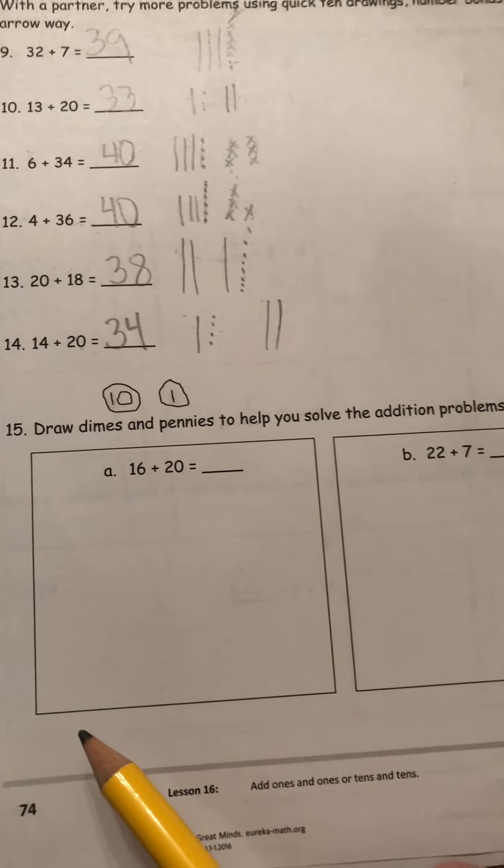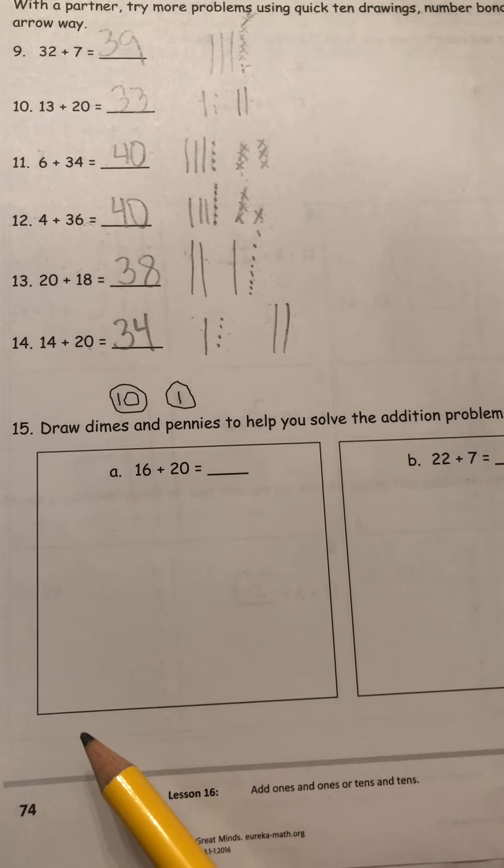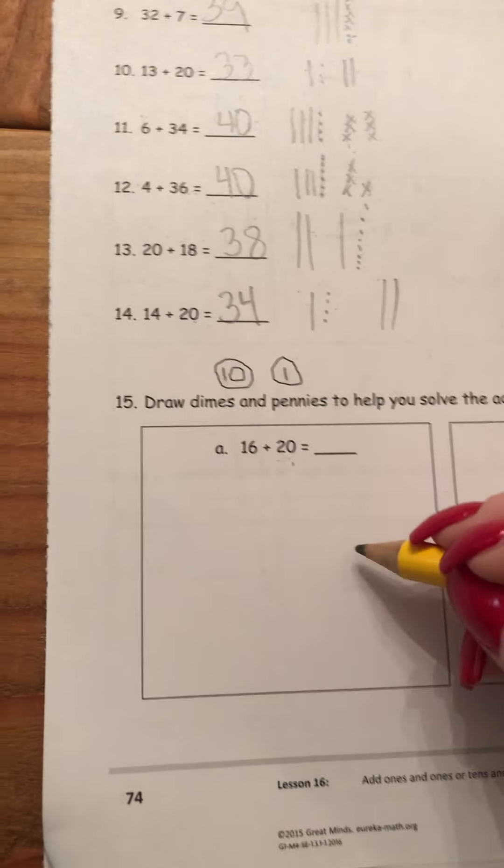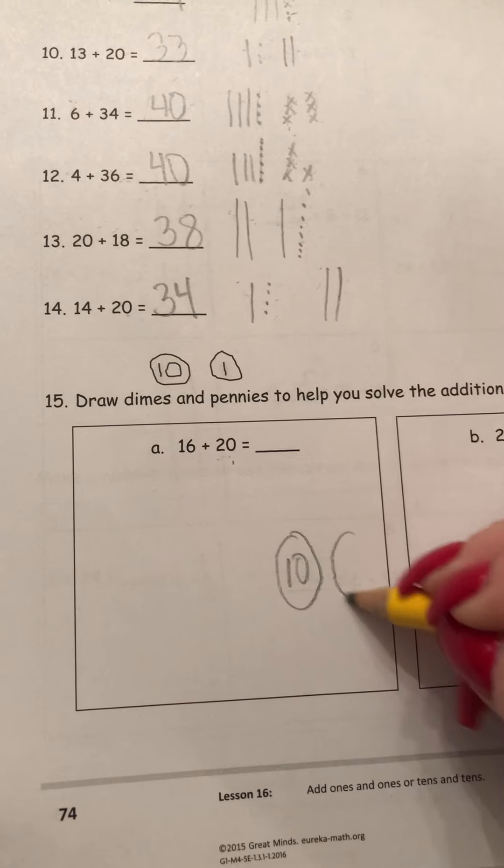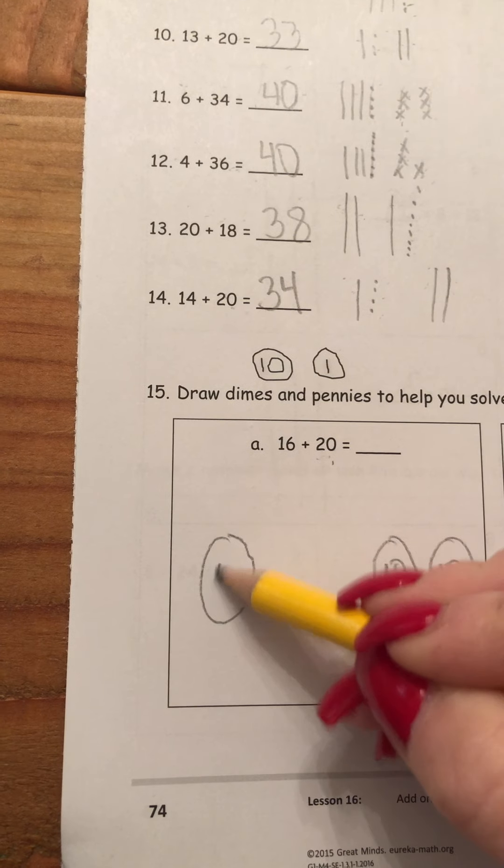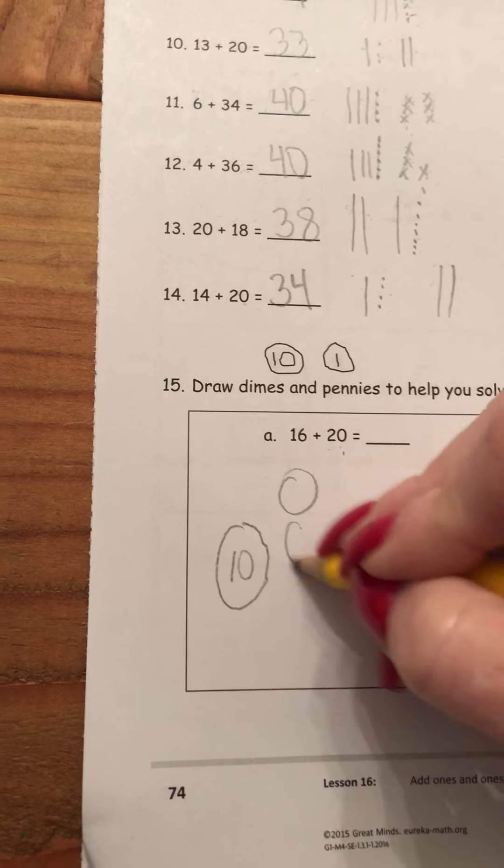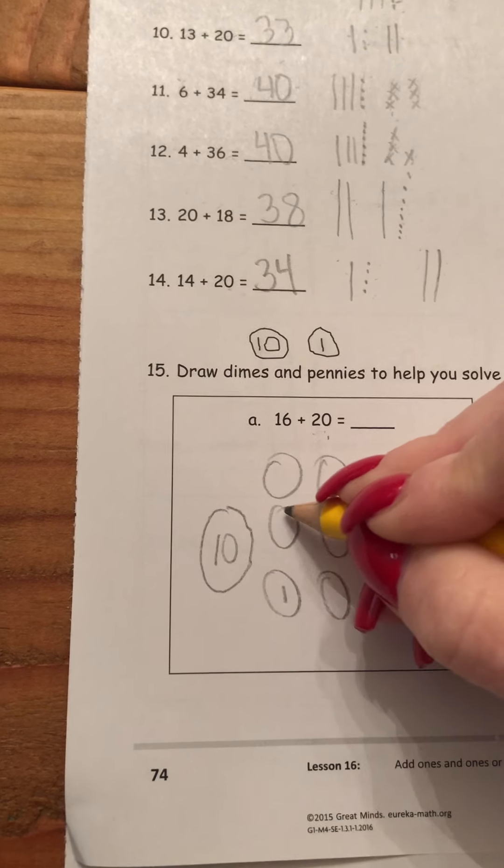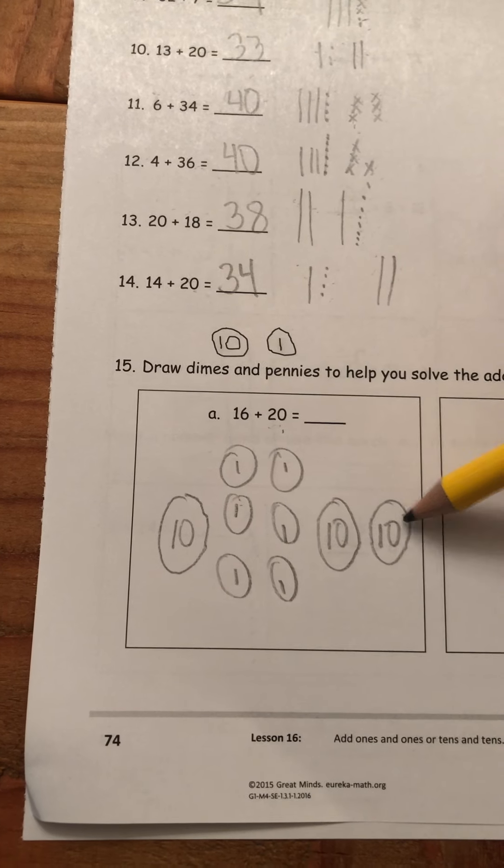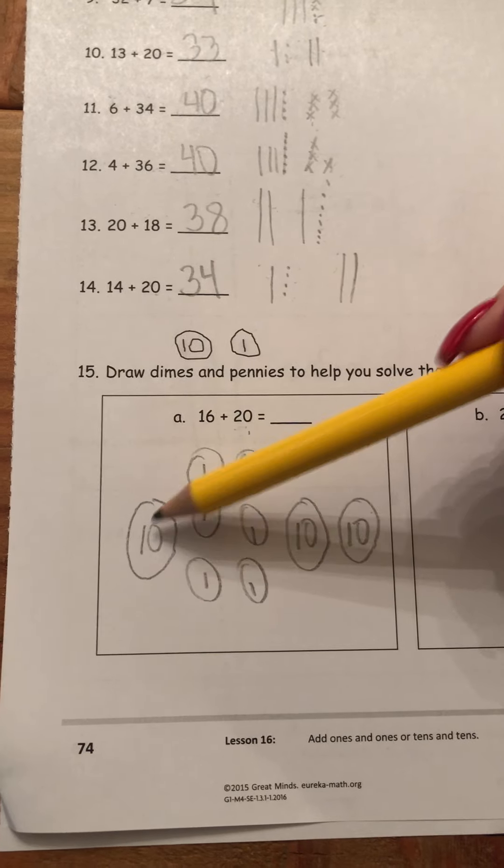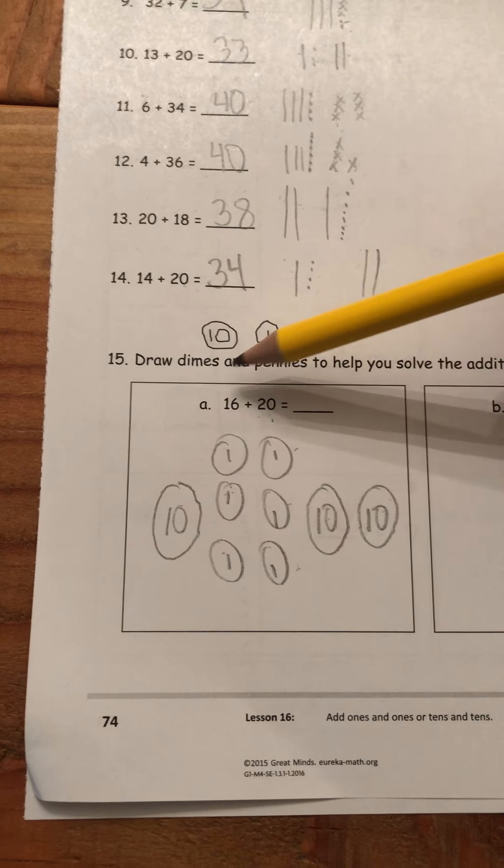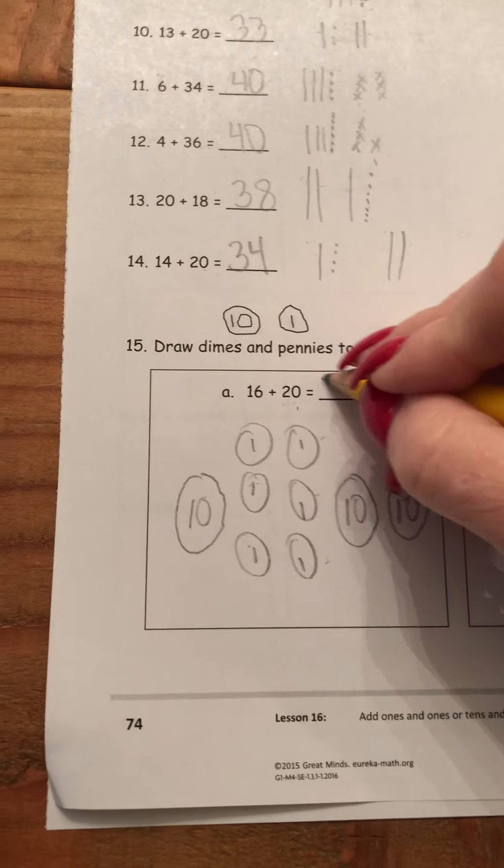The bottom directions read, draw dimes and pennies to help you solve the addition problems. So I'm going to draw two dimes for 20. I'm going to put a 10 on it so I know they're dimes. And 16 would be one dime. So there's a 10 and six little pennies. 1, 2, 3, 4, 5, 6. And I'm going to put ones in there. So I have 16 and 20. I'm going to count my 10s first. 10, 20, 30, 31, 32, 33, 34, 35, 36. 16 plus 20 equals 36.